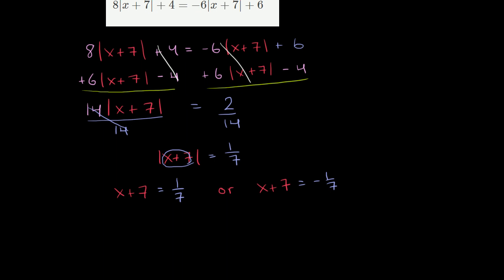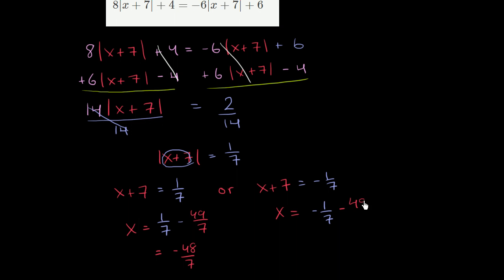So now let's just solve for x. If we subtract 7 from both sides for the first equation, we get x is equal to 1 seventh minus 49 over 7, which is equal to negative 48 over 7. And then for the other possibility, we get x is equal to negative 1 seventh minus 49 over 7, which gets us to negative 50 over 7. So the two solutions to what we thought was a complicated equation are negative 48 over 7 and negative 50 over 7.